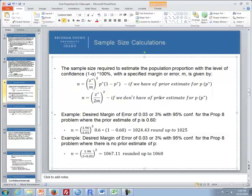But if we don't have a prior estimate for P or P star, if we don't have a P star, then we would just use this calculation where we would take the Z critical value divided by two times the desired margin of error, and we take this quantity and we square it.